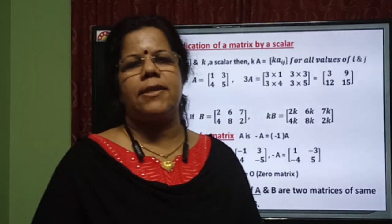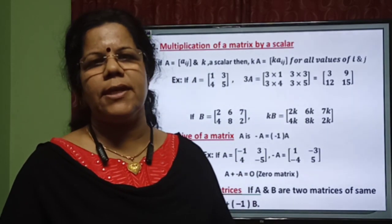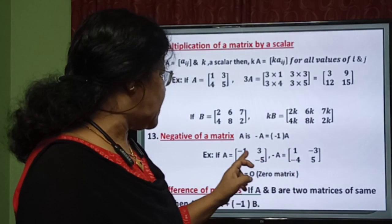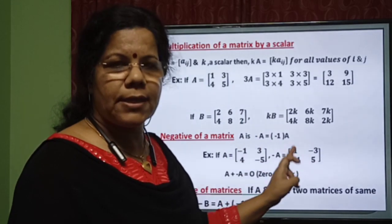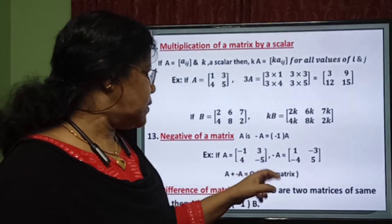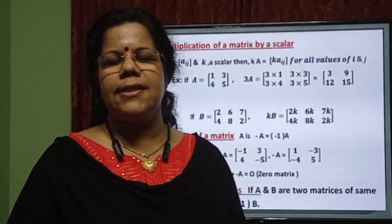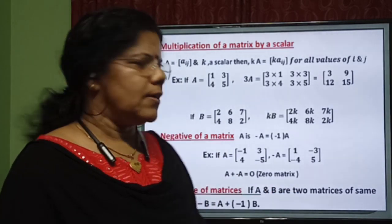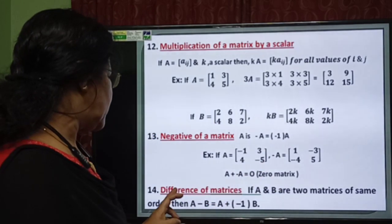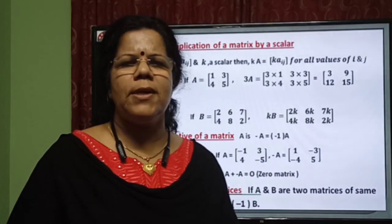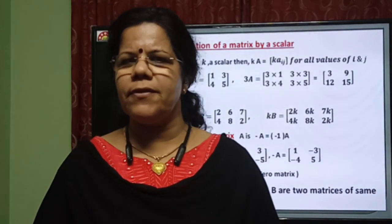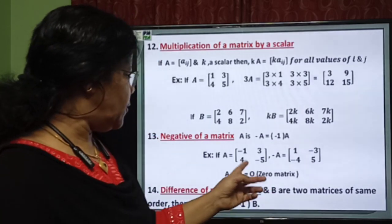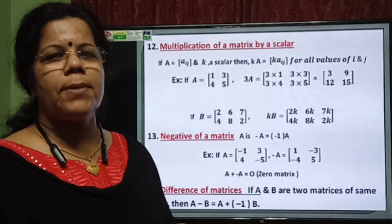Next: negative of a matrix. We know for any real number there is a negative — for example, negative 2. Like that, for a matrix also, the negative of A is defined as the matrix obtained by multiplying every element of matrix A with negative 1. One more thing: A plus negative A will be the zero matrix of the same order as A. Once you know the negative of a matrix, the difference A minus B is simply A plus negative B.